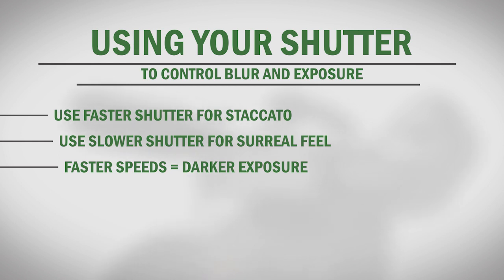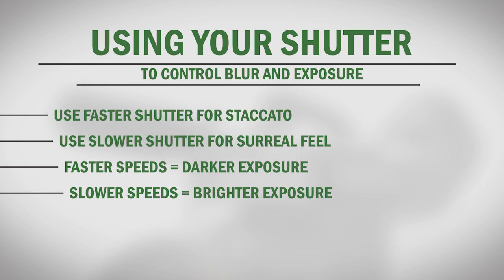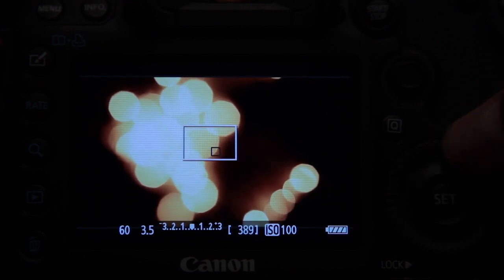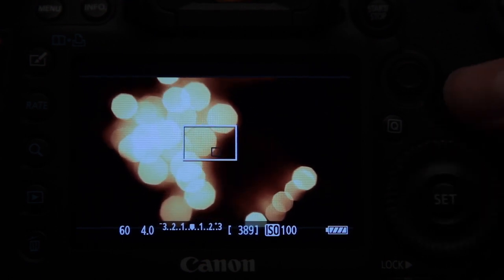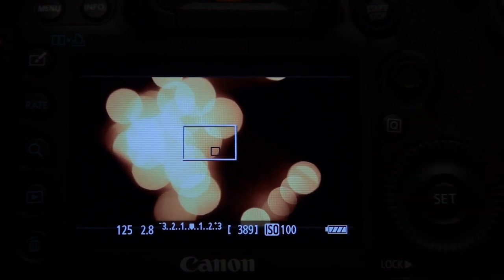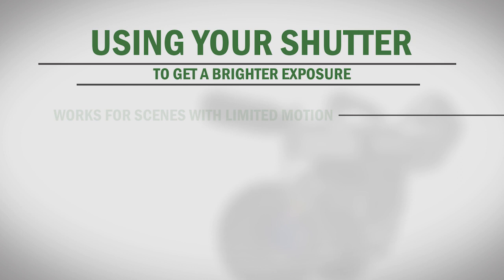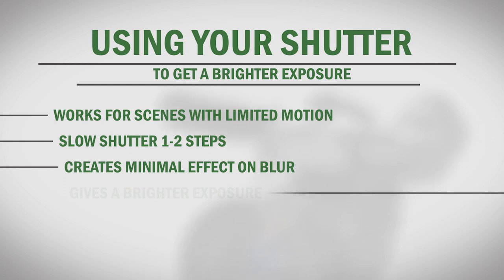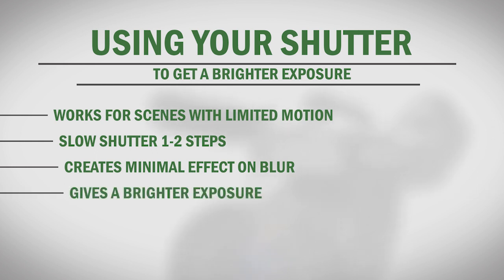Slower shutter speeds will leave your shutter open longer, allowing more light to hit each frame, which creates a brighter exposure. Using a shutter speed that's twice as long can be offset by closing your aperture by one full stop, while using a shutter speed that's twice as fast can be offset by opening your aperture one full stop. If you've got a scene that doesn't have a lot of motion, pushing your shutter speed one or two steps slower than normal can have minimal effect on your motion blur, while giving you a bit more exposure for dark scenes. And unlike gain, there's no noise added to your image when you use this method.